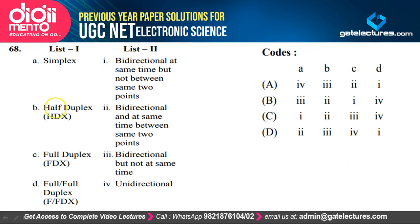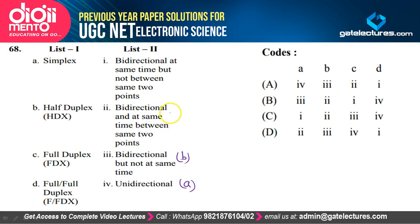Question 69: Matching transmission modes — simplex is unidirectional (A→4); half duplex is bidirectional but not at the same time (B→3); full duplex is bidirectional at the same time between the same two points (C→2); full/extended duplex is bidirectional at the same time but not between the same two points (D→1). Option A is the correct option.